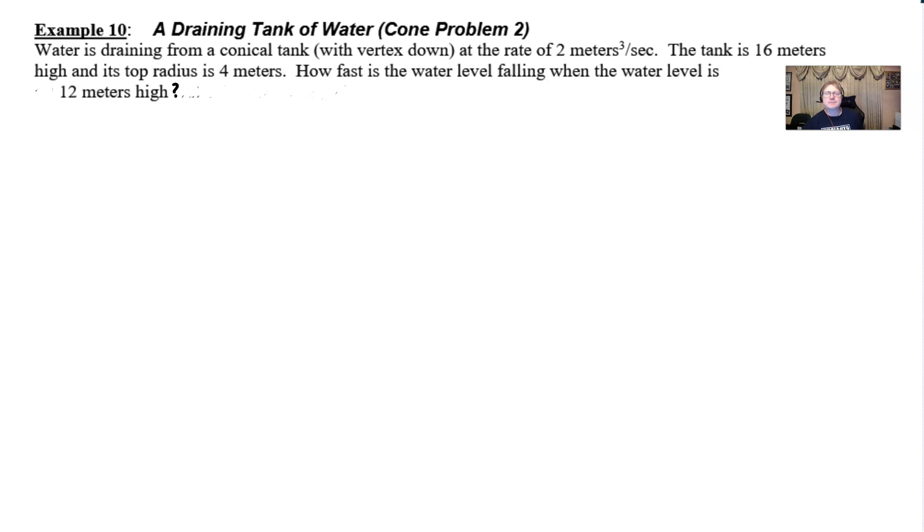We're going to start our problem like we normally do with this picture. An inverted conical tank would look like a cone that's situated like this. We have a cone that has a very specific height of 16 meters, and this cone has a very specific radius of 4 meters.